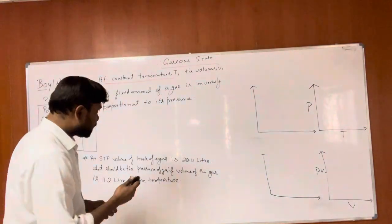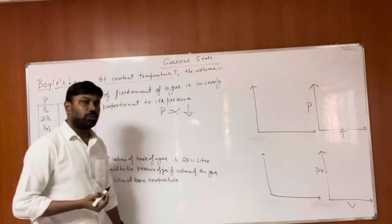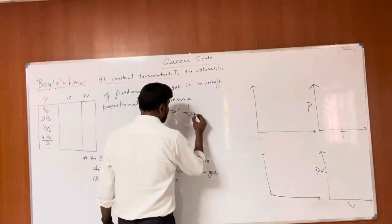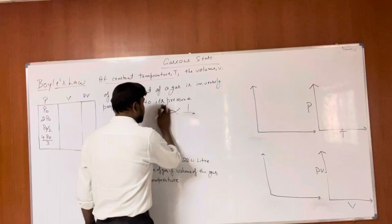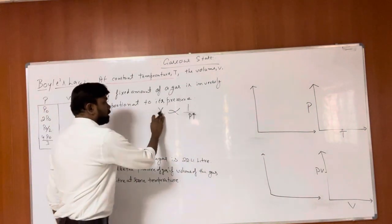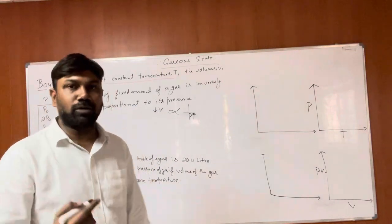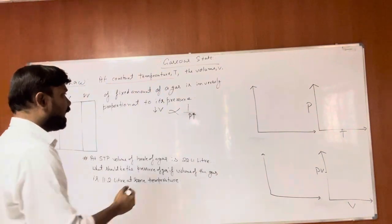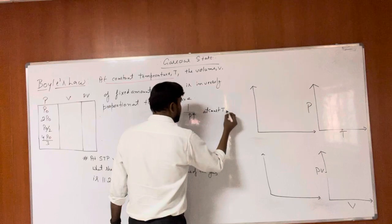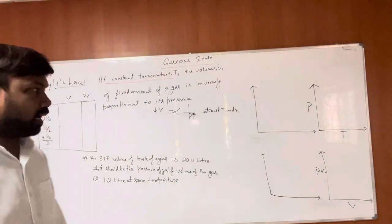Pressure is inversely proportional to V. If we increase the pressure, the volume will decrease. Conversely, if we decrease the pressure, the volume will increase at constant temperature and fixed amount of gas.